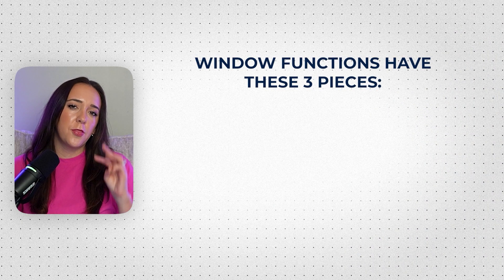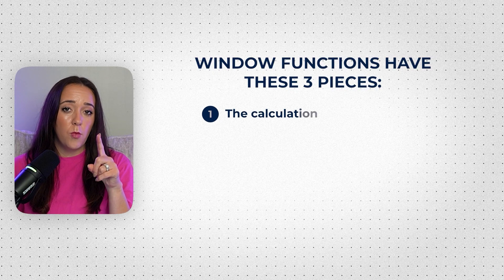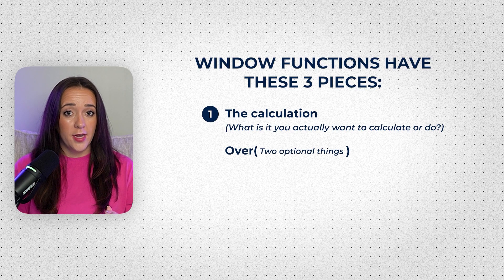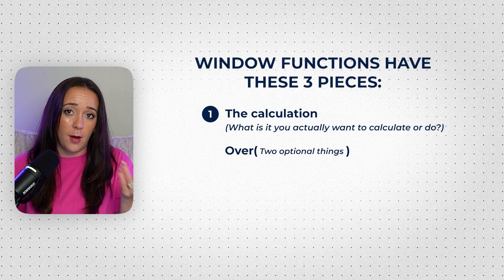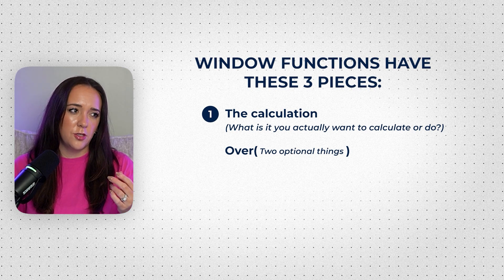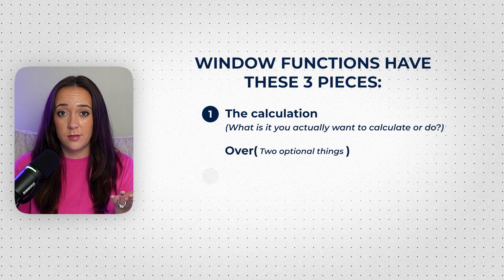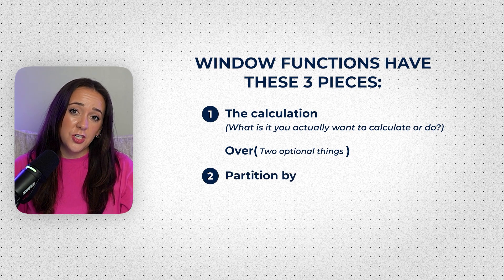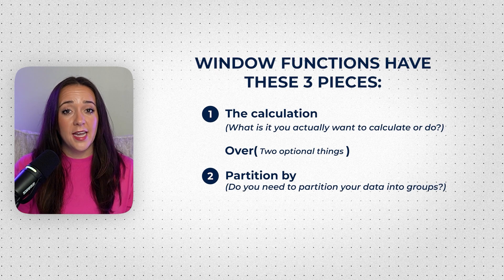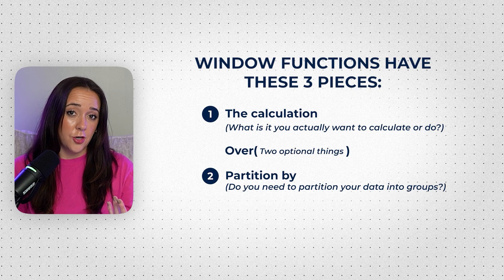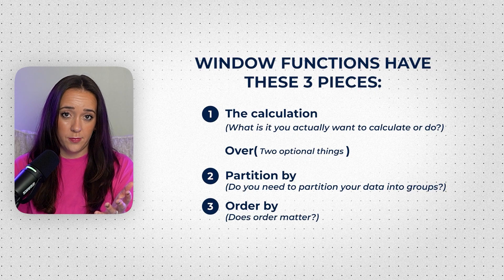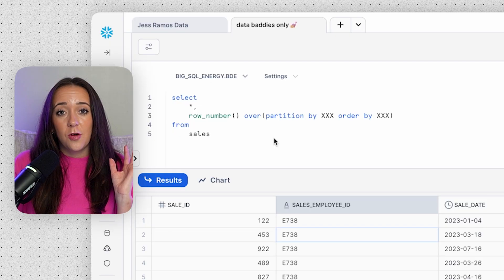When using window functions, you have three pieces to your formula. Number one: the calculation — what do you actually want to calculate? That's followed by OVER, and inside the parentheses you have two optional things depending on your business context and which window function you're using. First is PARTITION BY — if you want to partition your rows into different groups, that goes into PARTITION BY. Second is ORDER BY — do you need to order your rows by something within each group? So the three questions are: what's my calculation, do I need to partition my data, and does order matter?